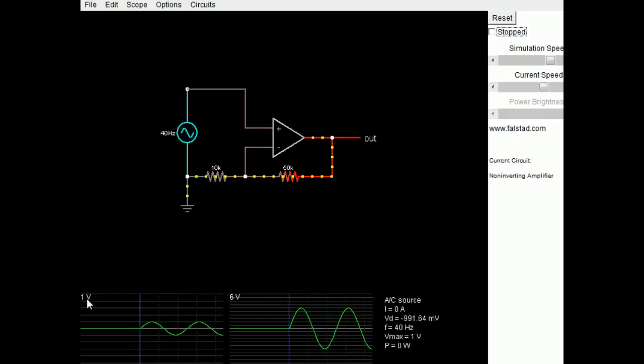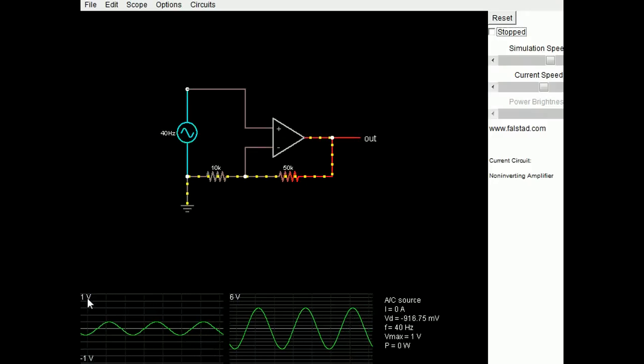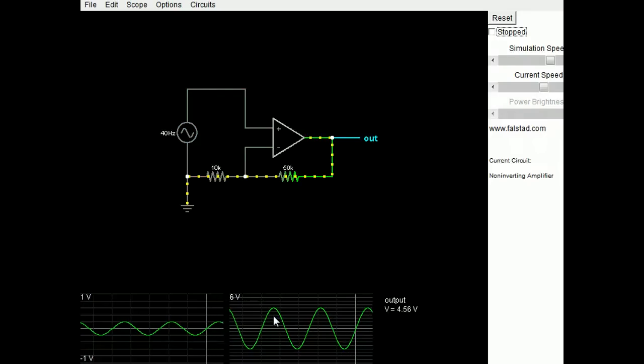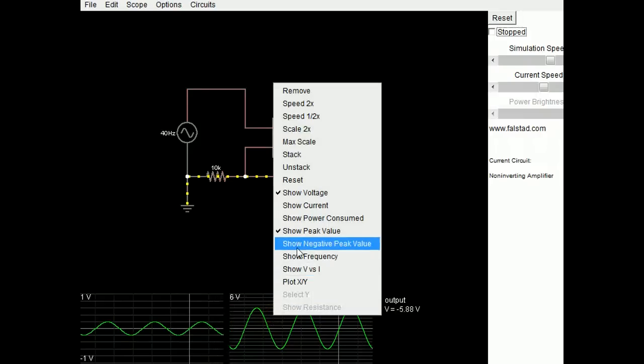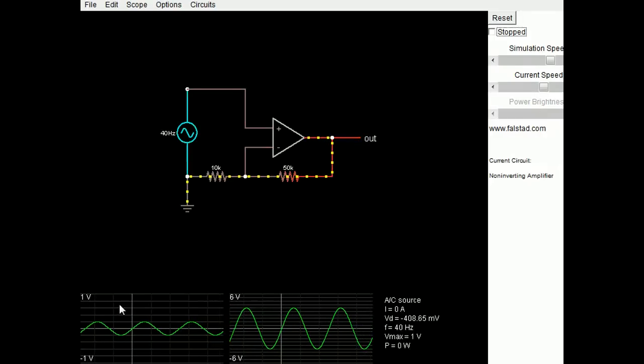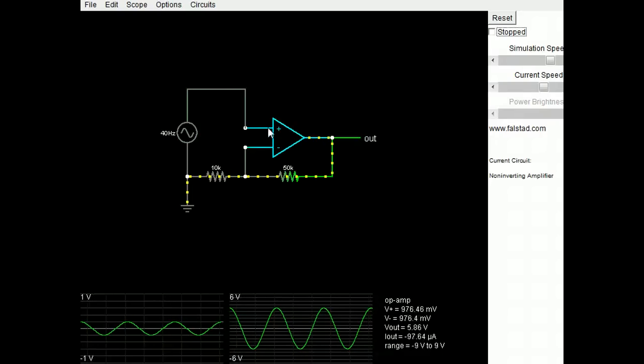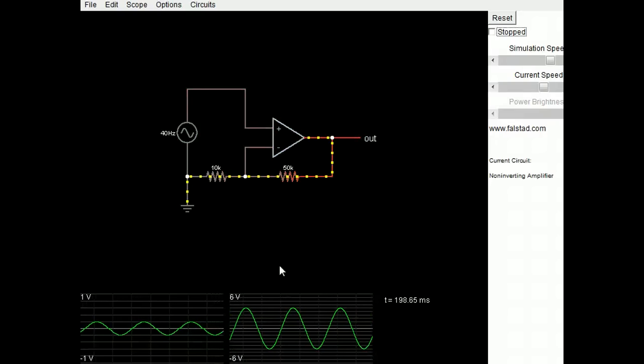It looks like here we're displaying the maximum voltage. If I right-click on the graph, I can show the peak value. I can also show the negative peak value down here. So 1 volt plus or minus 1 volt. Here I can show the negative peak value. So I have plus or minus 6 volts. This is a gain of 6, which is right for a non-inverting amplifier. 1 plus the ratio of these feedback resistors.